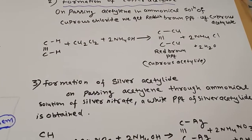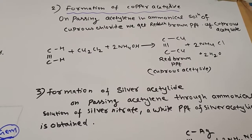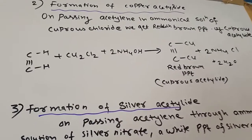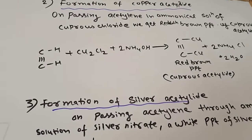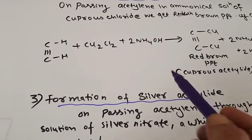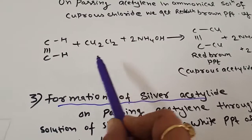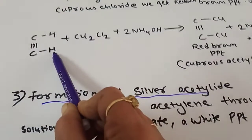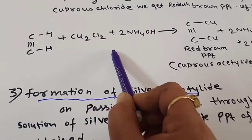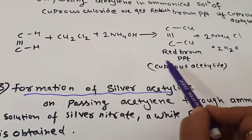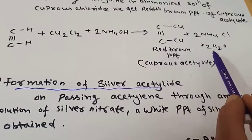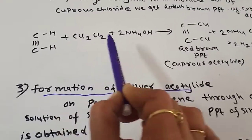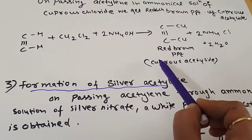Acetylides can also be formed as copper acetylide and silver acetylide, as acetylene is very reactive and can easily react with metal salts. For copper acetylide formation: when acetylene is passed through an ammoniacal solution of cuprous chloride (Cu2Cl2), a reddish-brown precipitate of cuprous acetylide is obtained, with ammonium chloride and water as byproducts.